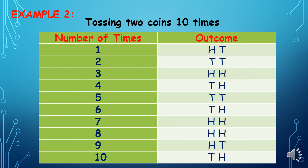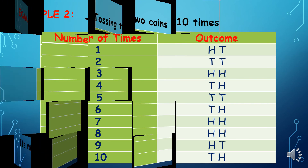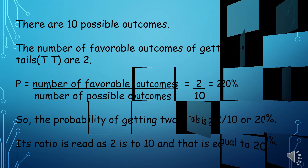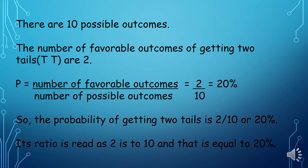Example number 2: tossing 2 coins 10 times. The table shows the number of times the 2 coins were tossed and the outcome every time the 2 coins were tossed. There are 10 possible outcomes. The number of favorable outcomes of getting 2 tails are 2.